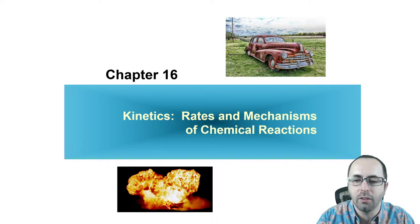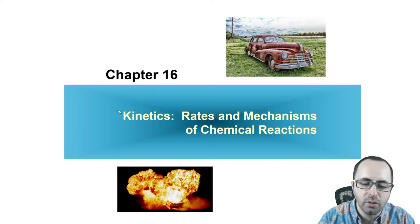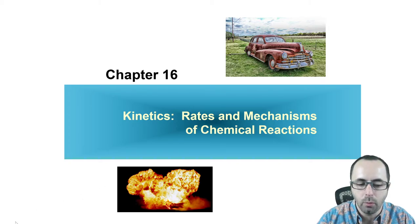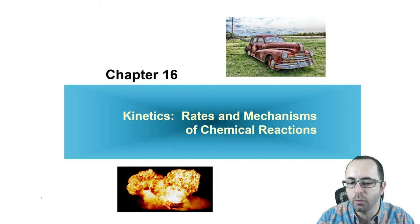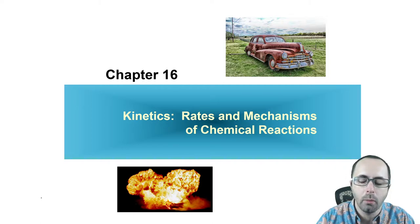We know some chemical reactions happen very slow, like the rusting of a car, as you can see in the top frame here. Some reactions happen very quickly. How can we describe how quickly a reaction will happen relative to another? This week we're going to be just describing how fast reactions go.